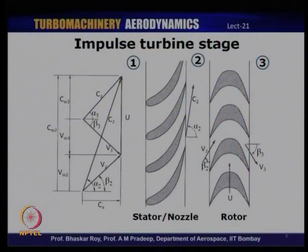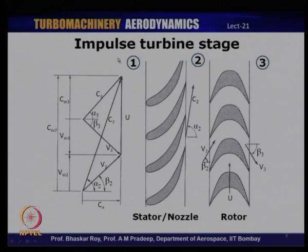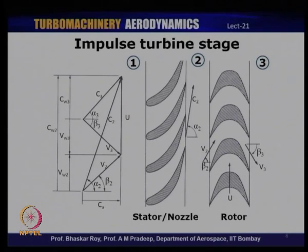In an impulse turbine stage, v_w2 = −v_w3 (equal magnitude, opposing directions), making degree of reaction zero. The physical implication is that nothing much happens in the rotor regarding enthalpy drop — the rotor simply deflects the flow and there is no change in enthalpy in the rotor. Since the numerator (enthalpy drop in rotor) is zero, the degree of reaction is zero.